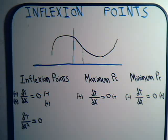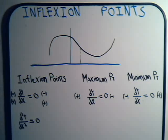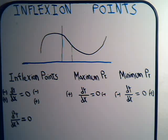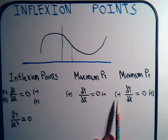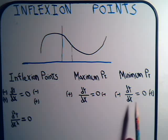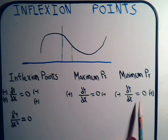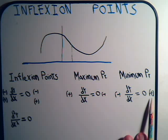The same situation applies to a minimum point, except here we have a change of direction of the opposite sign. Just prior to the minimum point, the slope is going to be negative, then it becomes zero, then the slope or the first derivative becomes positive.